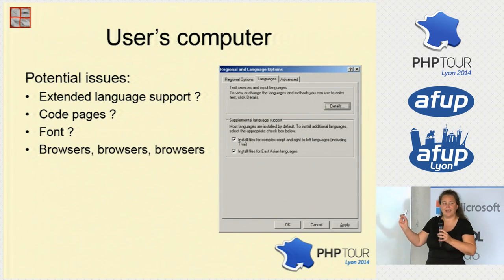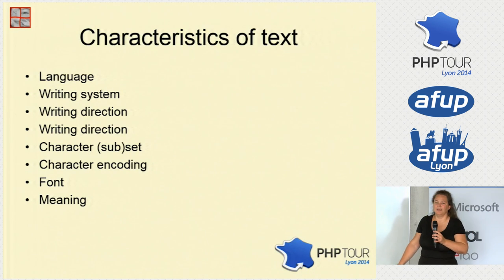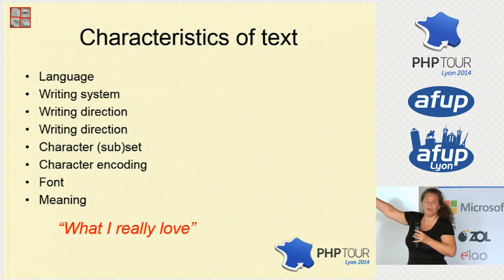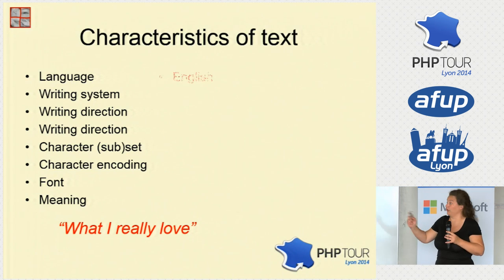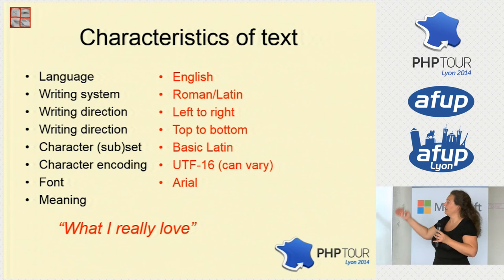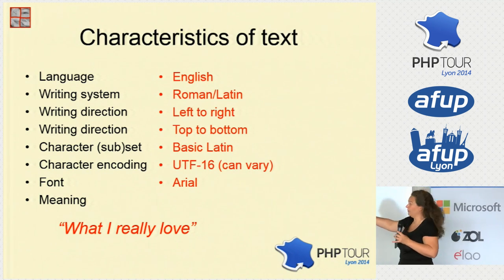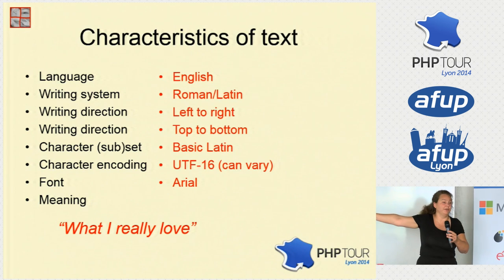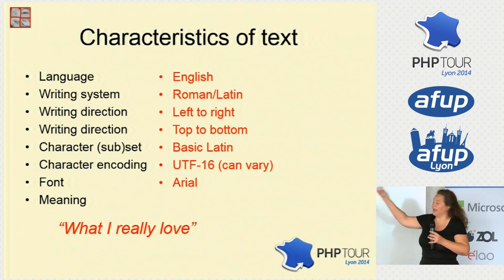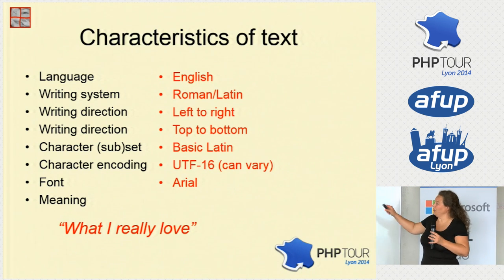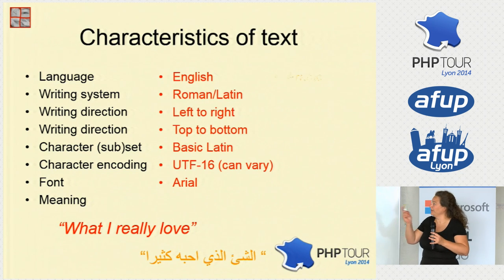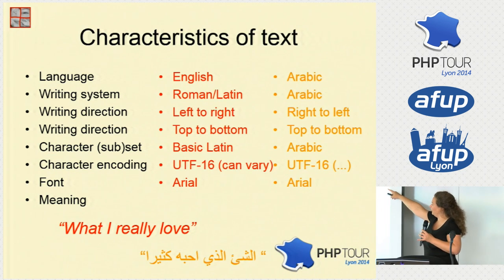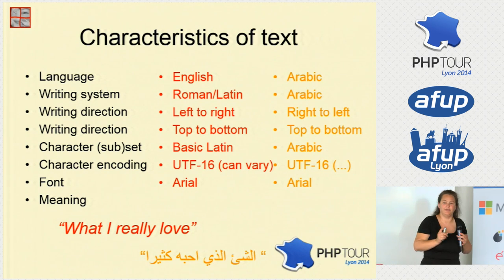Let's look at what text really is and its characteristics. If we take an English phrase, the language is English, writing system is Roman Latin, direction is left to right and top to bottom, with basic Latin as the character subset. The character encoding in this case is UTF-16 because this is a Windows computer. The font used is Arial. If we use the same phrase in Arabic, we get different answers — it's right to left, top to bottom, Arabic script. There are differences we need to take into account.